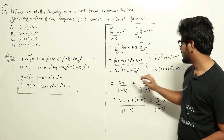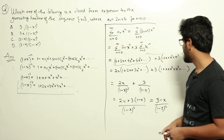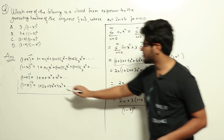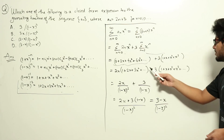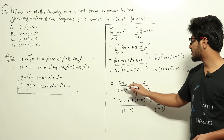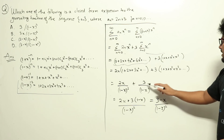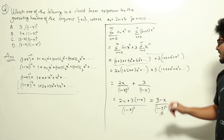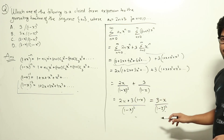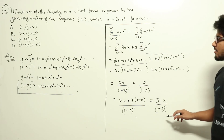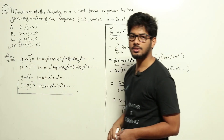The sequence (1 + 2x + 3x² + ...) equals (1-x)^{-2}, and (1 + x + x² + ...) equals (1-x)^{-1}. Substituting directly gives 2x/(1-x)² + 3/(1-x). Solving this, we get (3-x)/(1-x)², which is option D.